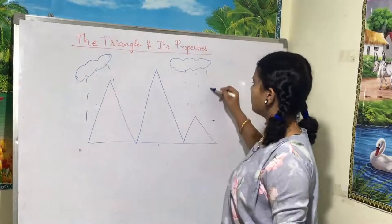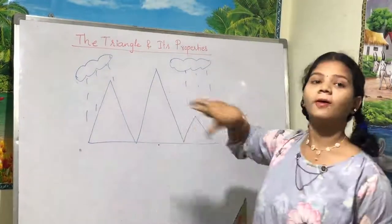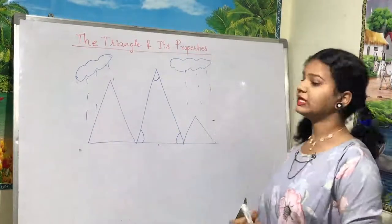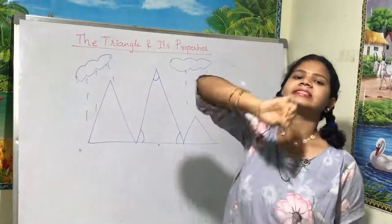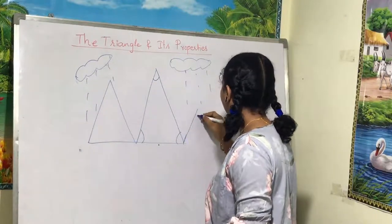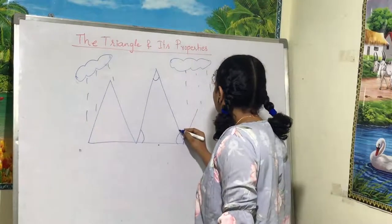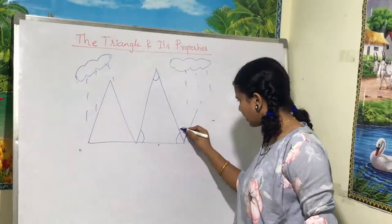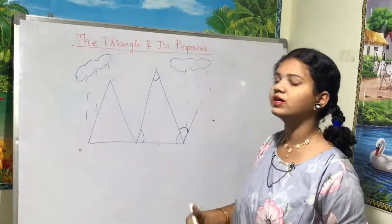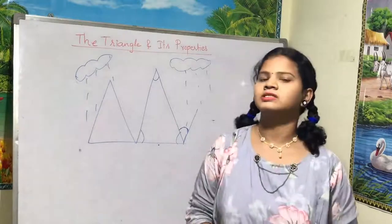Now we have interior and exterior angles. The interior angles are the angles formed inside the triangle. This is an angle, this is an angle, and this is also an angle — these three angles formed inside the triangle are called interior angles. The exterior angles are the angles formed outside the triangle. If we extend a line, the angle formed outside the triangle is called an exterior angle.